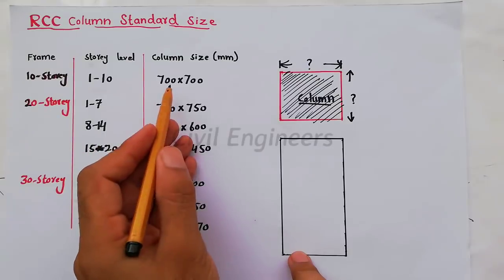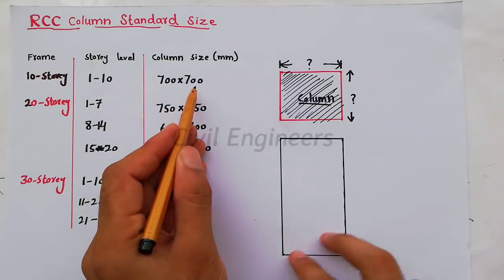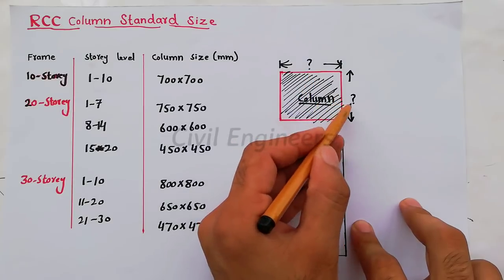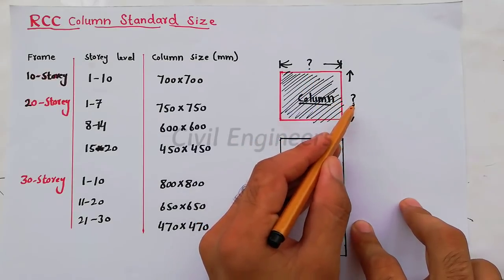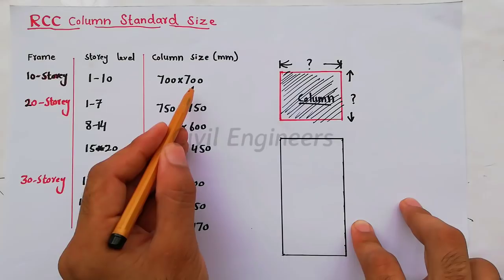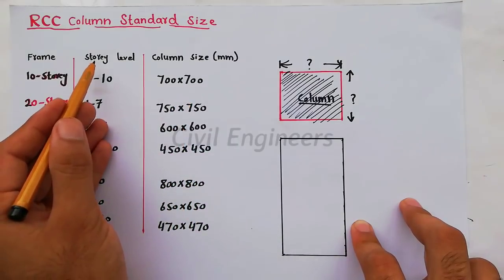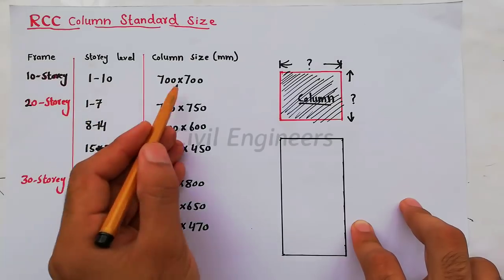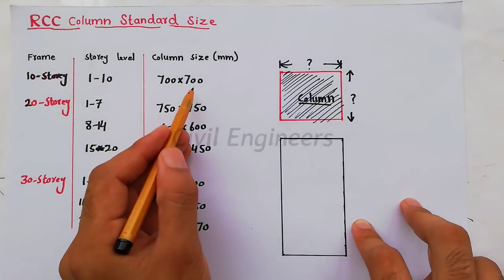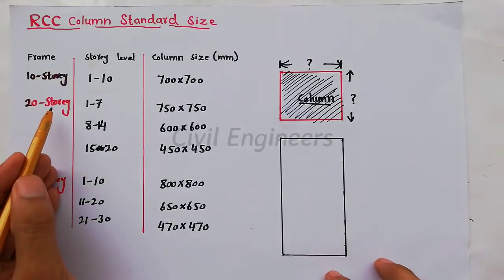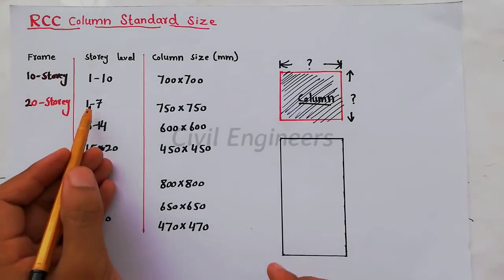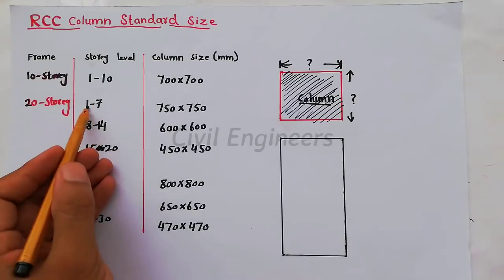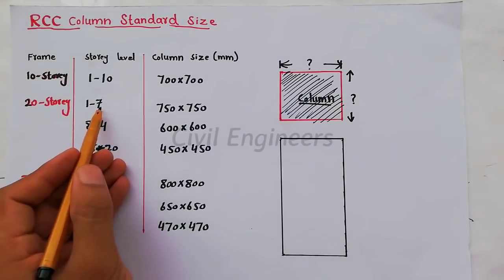For 10 story levels, from story level 1 to 10, the column size should be 700mm by 700mm. This side will be 700 millimeters and this side will also be 700 millimeters. From 1 story to 10 stories we can take 700 by 700mm.